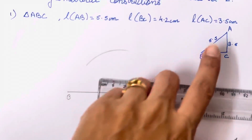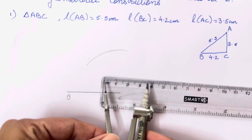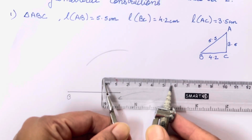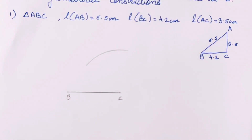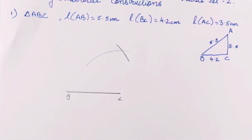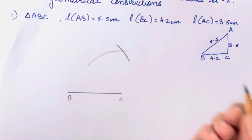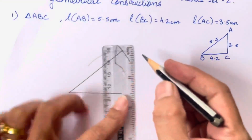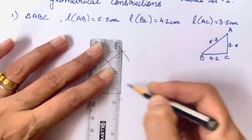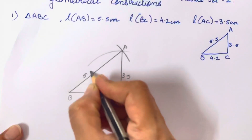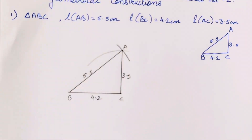Next we will construct the line that is 5.5 cm. We will draw 5.5 in just one go. You will see we have got a cross and an intersection point. Just join them and you will be able to get your triangle. Name the vertices accordingly. This is the construction of a triangle when all three sides are given.